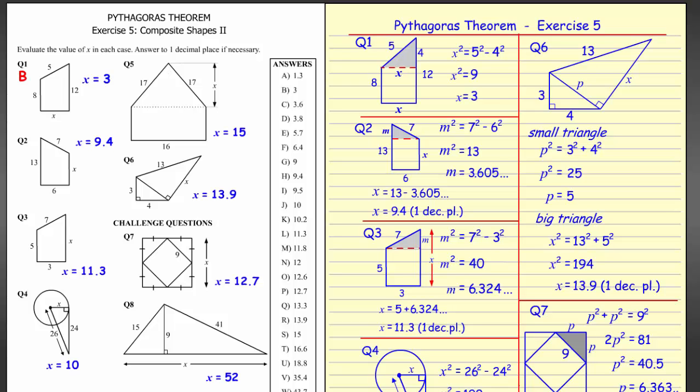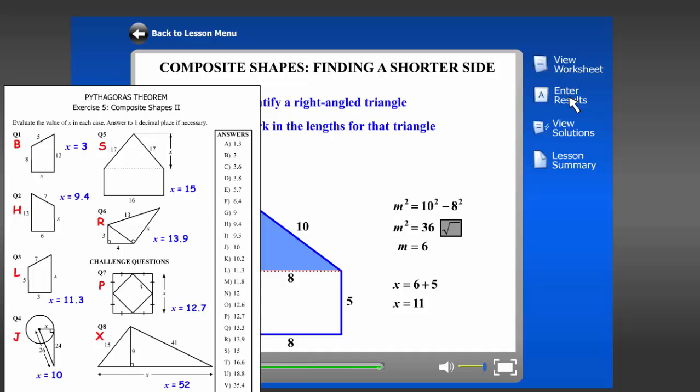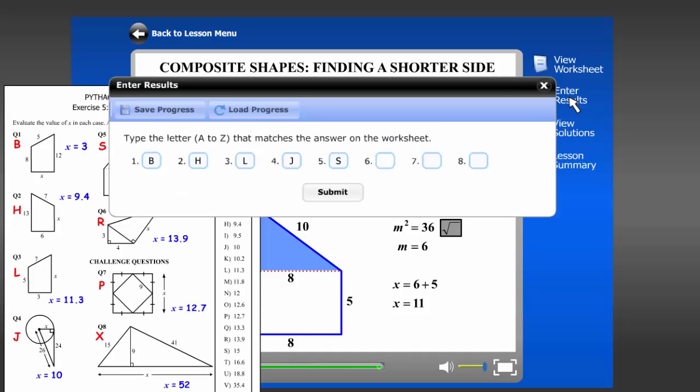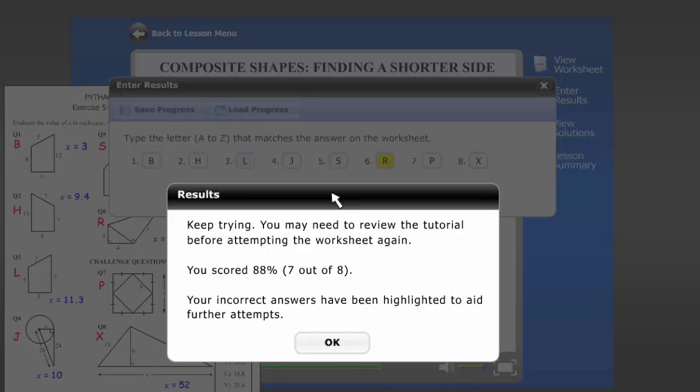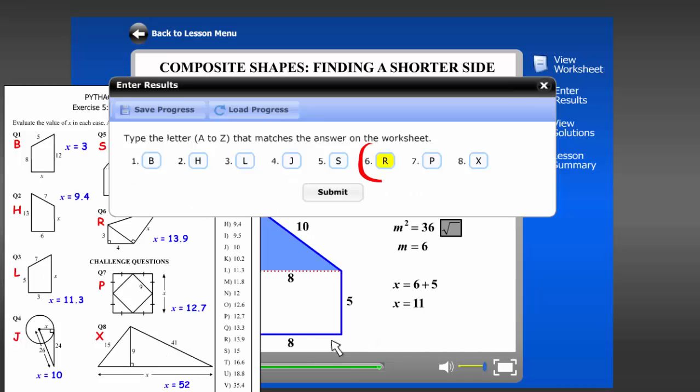Once the worksheet is completed and corresponding answers have been found, time to enter them. Simply type in the letters that are marked on their worksheet, press submit and the answers are marked automatically. In this example a score of 88%. A message here to try again, noting that any incorrect answers are highlighted to help identify what needs fixing. In this case the answer to question 6 was wrong.